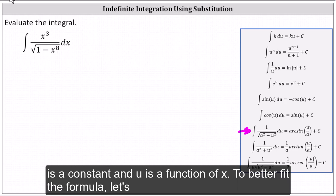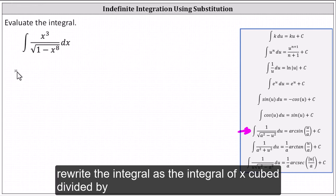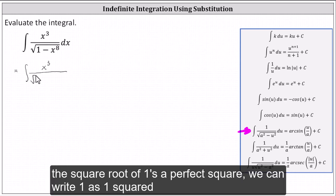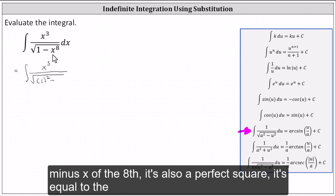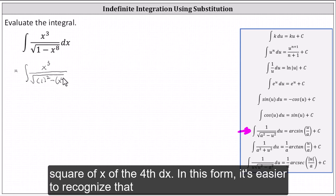To better fit the formula, let's rewrite the integral as the integral of x cubed divided by the square root of, one's a perfect square, we can write one as one squared minus x to the eighth is also a perfect square, it's equal to the square of x to the fourth, dx.